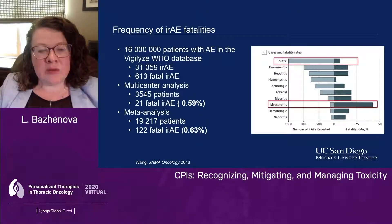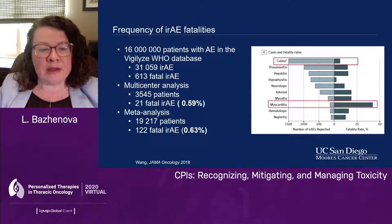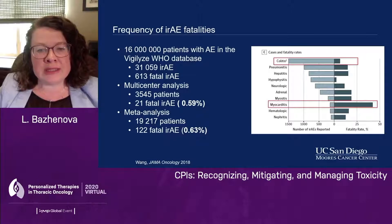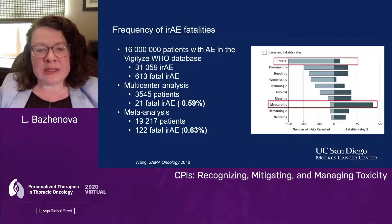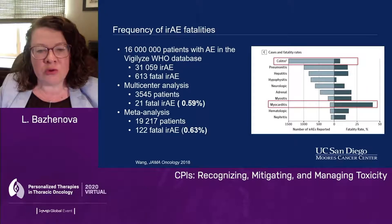The good news is that immune-related adverse events are generally not fatal. Looking at a couple of large retrospective databases, the patient fatality rate of immune-related adverse events is about 0.6%. Fatality depends on the immune-related adverse event itself — myocarditis has almost 50% fatality rate, contrary to colitis or hypophysitis where fatality rate is in the single digits or low teens.